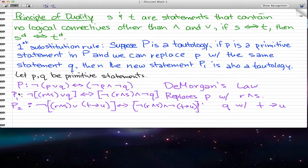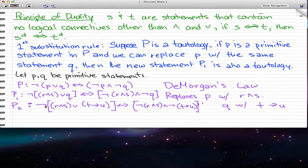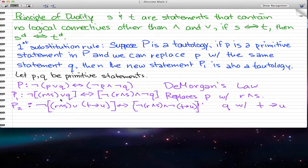So all these three, these three statements are tautology, because they're pretty much, P1 and P2 are pretty much derived from P. So that's that. That shows you how the first substitution rule works. And continuing on, I have this truth table for you.